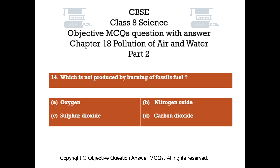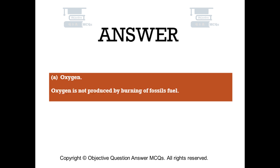Question number 14. Which is not produced by burning of fossil fuel? Option A: Oxygen. Option B: Nitrogen oxide. Option C: Sulfur dioxide. Option D: Carbon dioxide. The right answer is Option A — Oxygen. Oxygen is not produced by burning of fossil fuel.